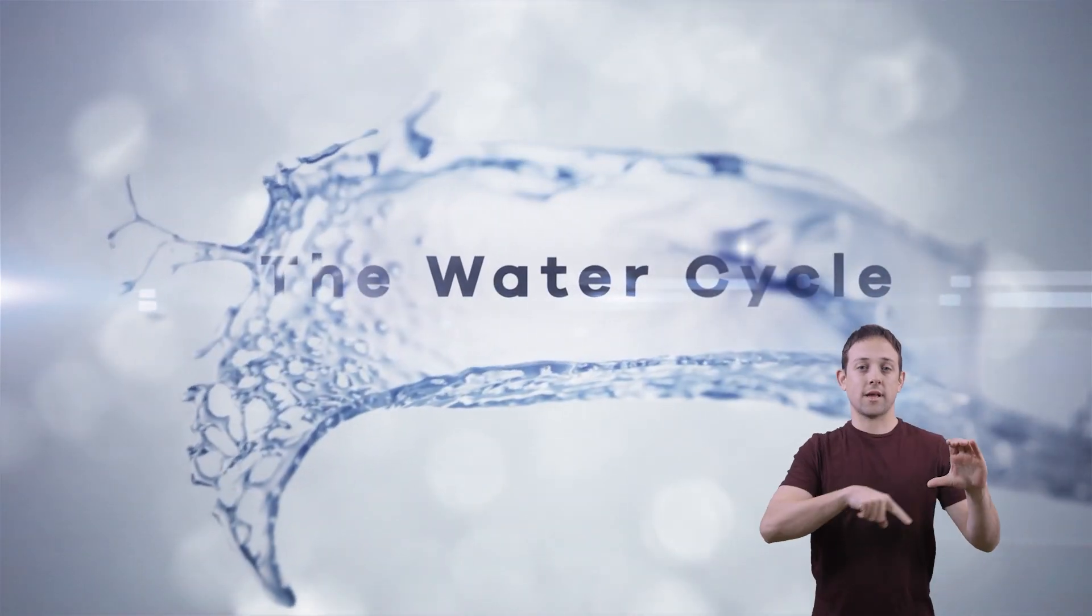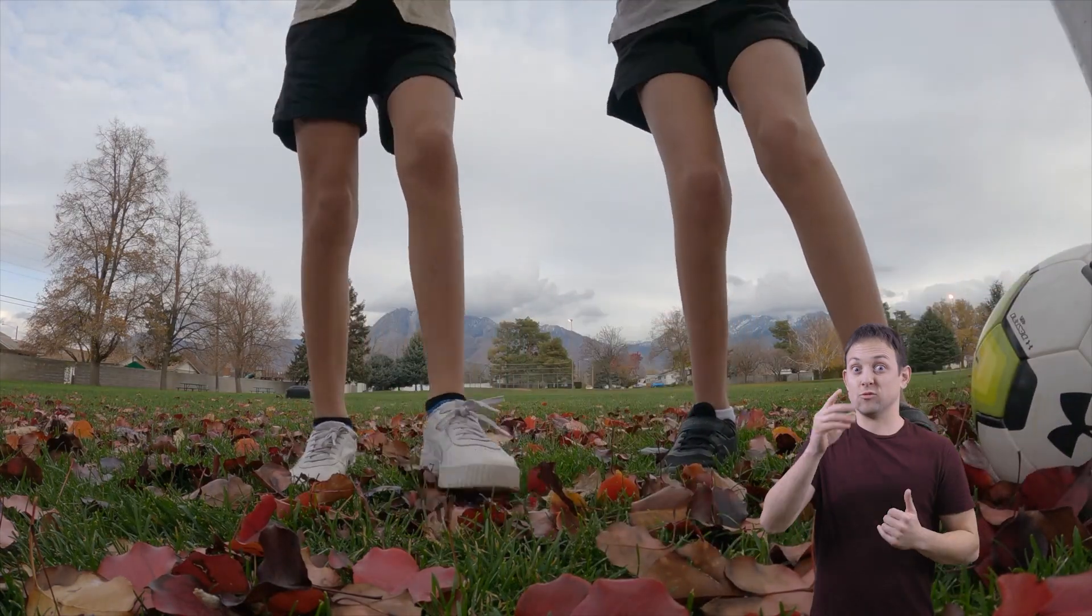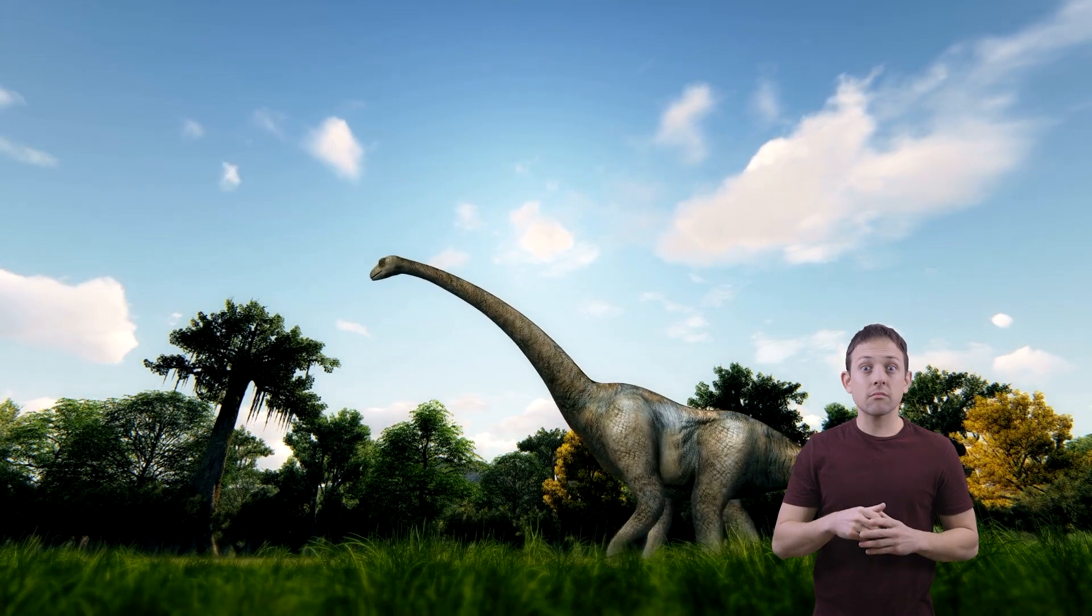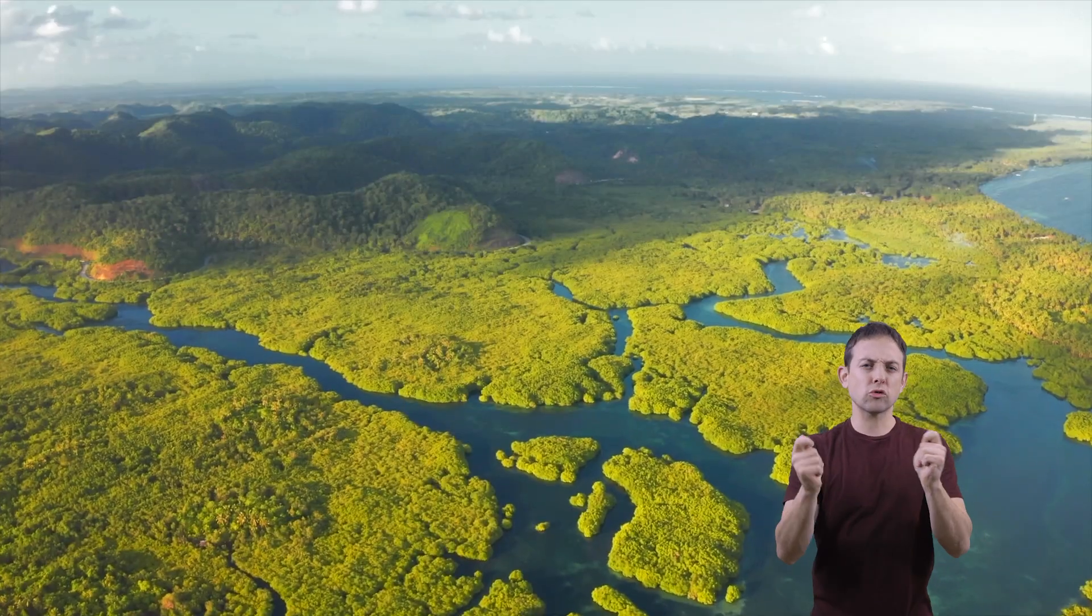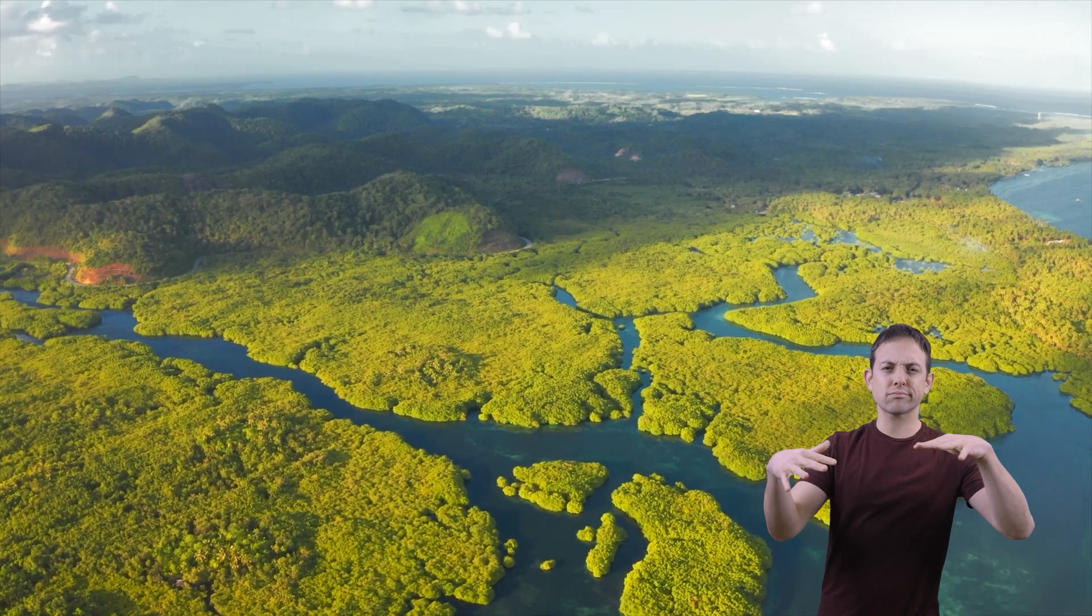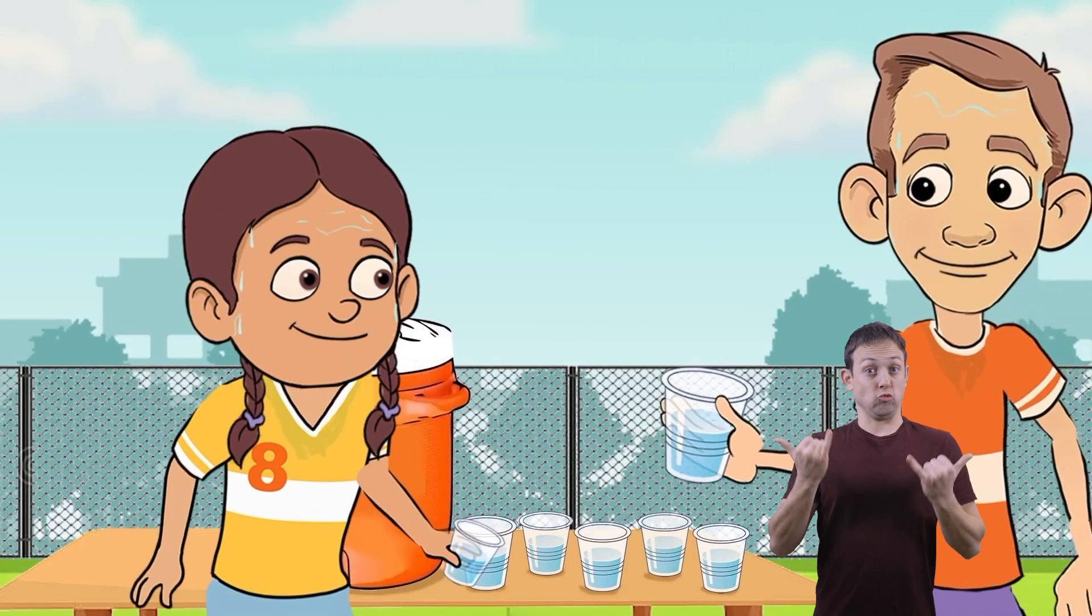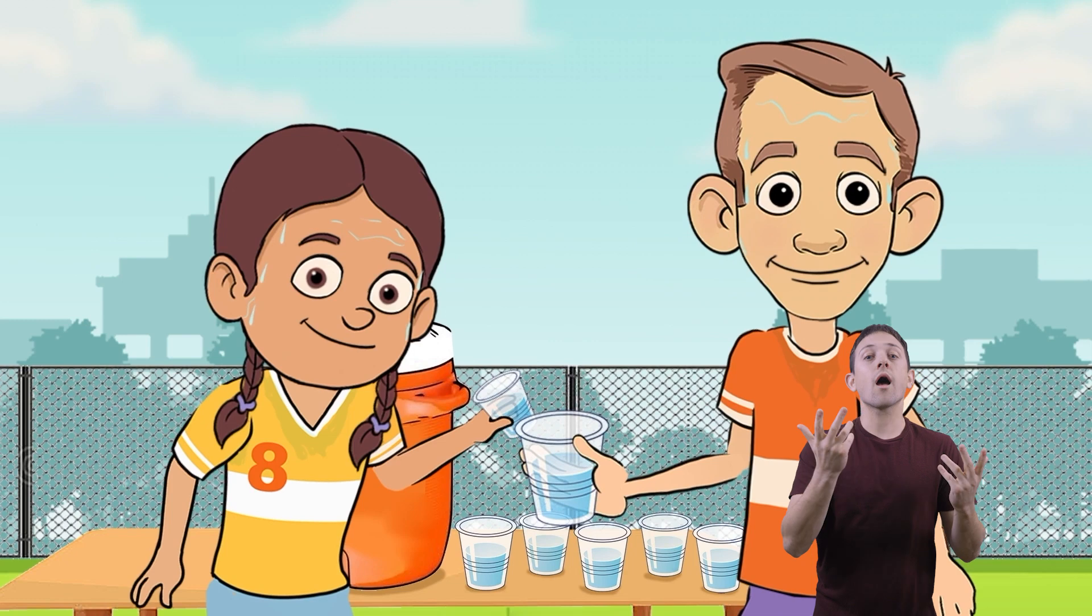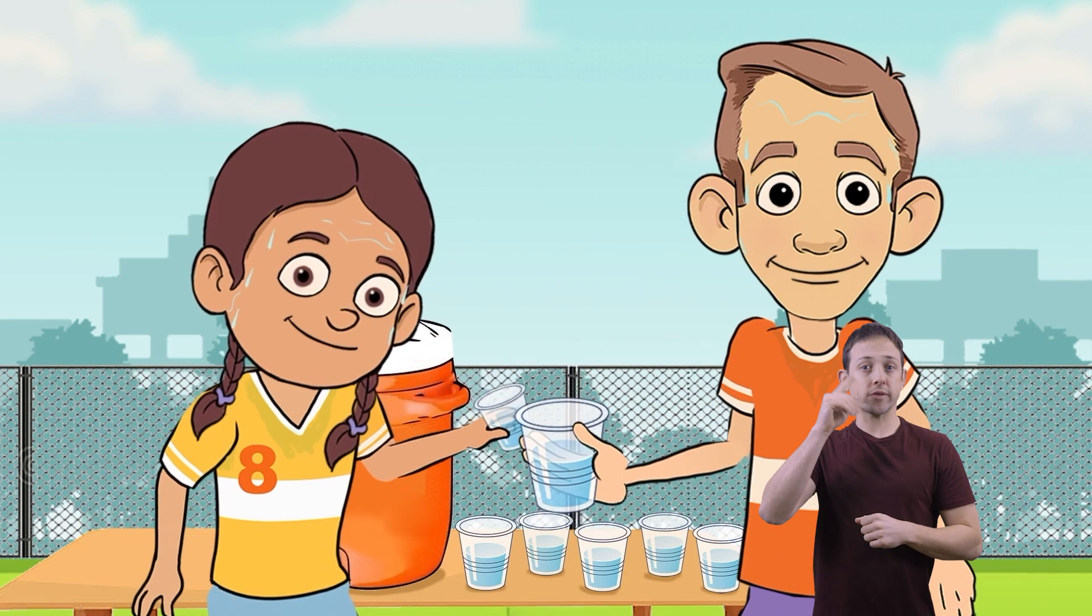The Water Cycle. Believe it or not, but the water you drink today may actually be millions of years old. This is because the water on Earth has existed since the beginning of time and is constantly moving and changing phases. This happens through a process called the water cycle. Today, we are going to learn all about the water cycle and how it works so that we can protect our water and make sure there is plenty for future generations.